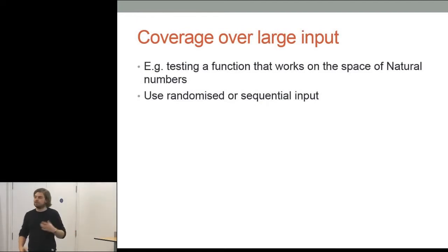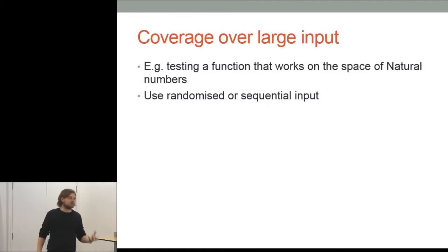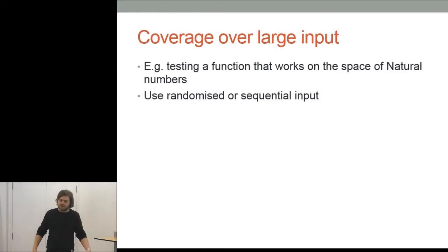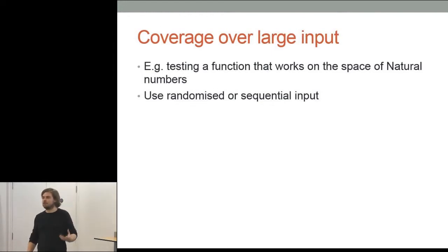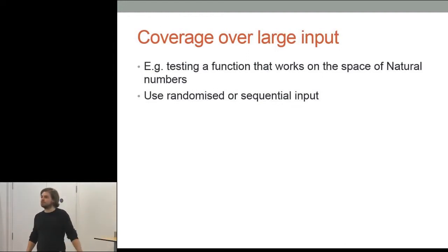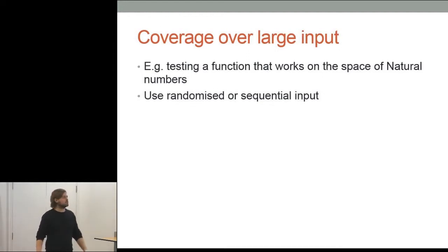AutoFixture can provide coverage over a large input space. For example, if you want to write a function that works on the set of natural numbers — like if you're testing addition — it can create randomly generated numbers so you don't have to worry about going through the entirety of the infinite space of natural numbers, which would take forever. You can use either randomized or sequential input as you prefer. The API is fairly flexible in terms of what it will let you do.